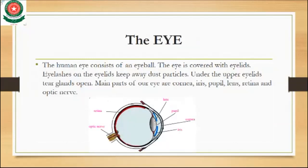The first sense organ is the eye. The eye consists of an eyeball and is covered with eyelashes on the eyelids. They are used to keep away dust particles. Under the upper eyelids, tear glands open. The main parts of our eye are: cornea, iris, pupil, lens, retina, and optic nerve.